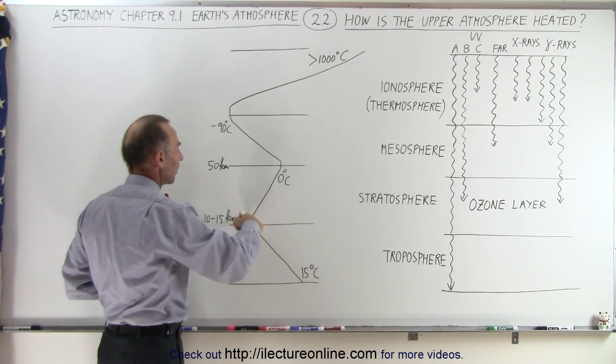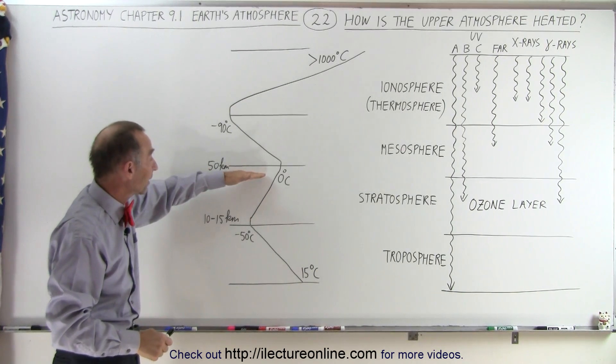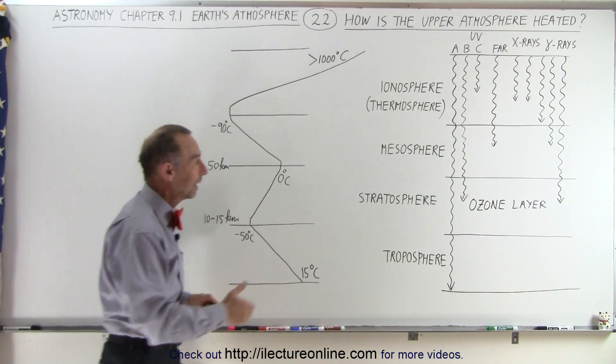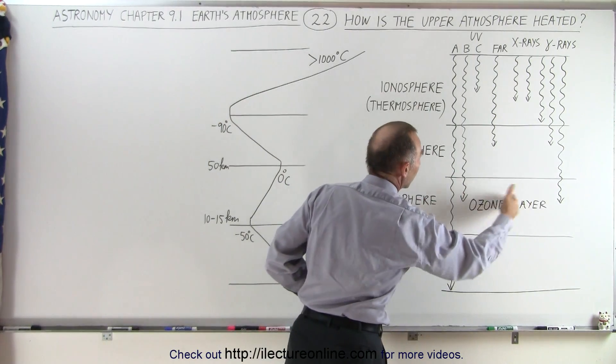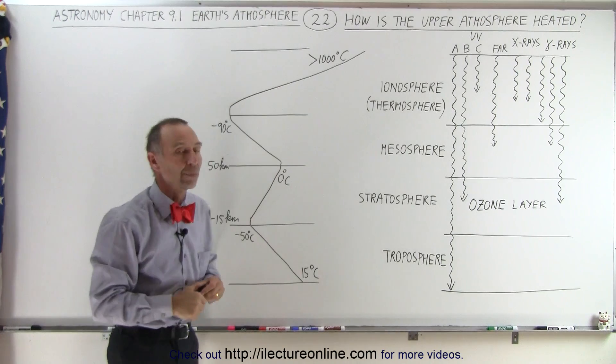You can see that being this high up, it's amazing that the temperature reaches almost zero degrees centigrade by the time we get to the top of the stratosphere. This is primarily because of the radiation absorption, primarily the UVB radiation.